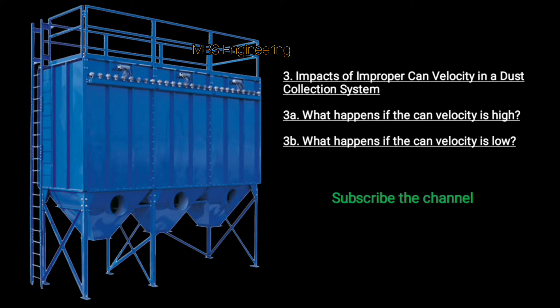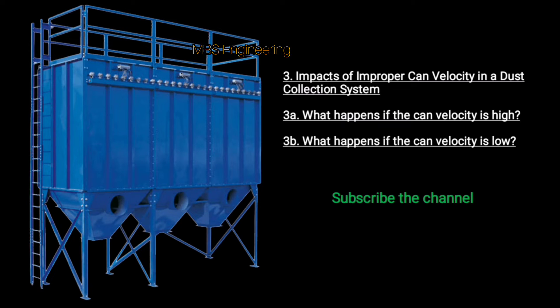Next, we look at the impacts of improper can velocity in a dust collection system. The first point is what happens if the can velocity is high, and the second point is what happens if the can velocity is low.